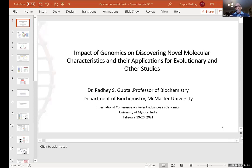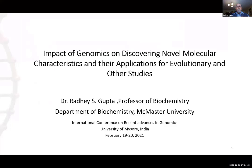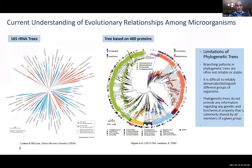To begin, let me give you an overview of the current understanding of evolutionary relationships among microorganisms. The evolutionary relationship among microorganisms is commonly determined based on phylogenetic trees, and most of it is currently based on 16S or small subunit ribosomal RNA trees. But as genome sequences have become available, it's also possible to construct trees based on large numbers of datasets of proteins or gene sequences. However, in all of the constructed phylogenetic trees, the different groups of organisms are found to form various clades.